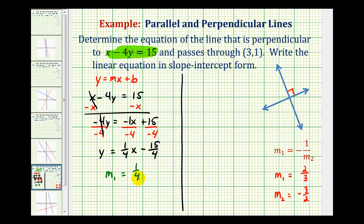Which means if we want a line that's perpendicular to this, we need the slope that's the negative reciprocal of this. So if we flip this over and change the sign, we would have a slope of negative 4 over 1, which simplifies to negative 4.